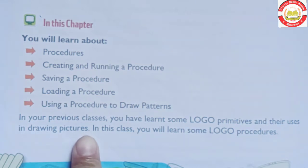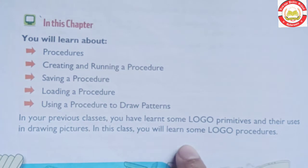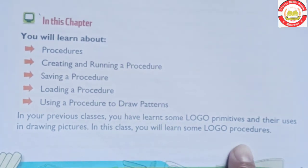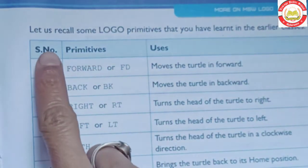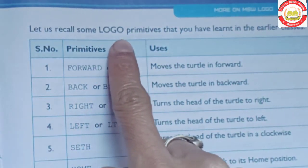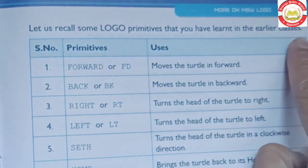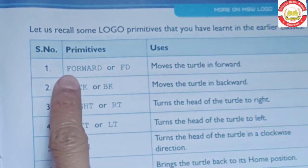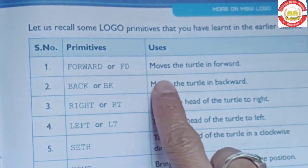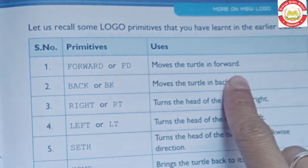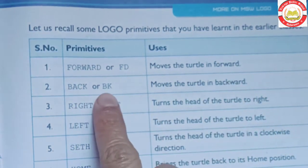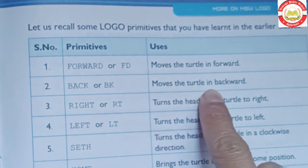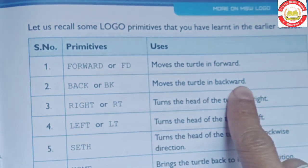In this class, you will learn some Logo procedures which we studied in the first class. First is Forward (FD) — this command is a primitive used to move the turtle forward. Backward (BK) is used to move the turtle backward.